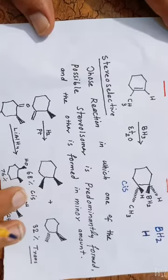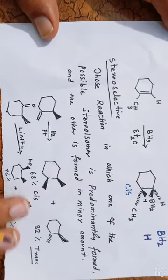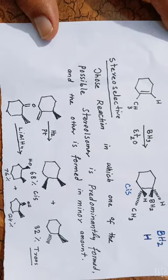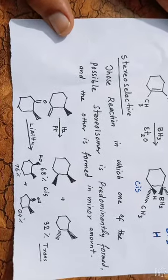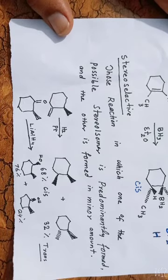Now, let's talk about stereoselective reactions, those reactions in which one possible stereoisomer is predominantly formed over another. There are two possibilities of the product.